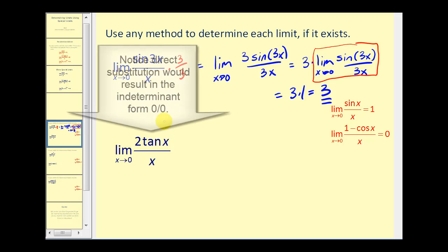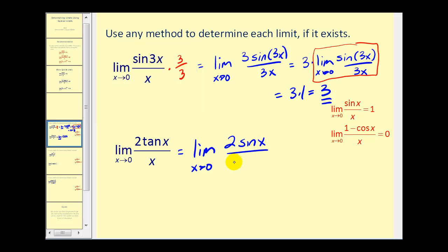Let's take a look at another one. Let's change tan(x) into the quotient of sin(x) divided by cos(x). So this would be the same as the limit as x approaches zero of 2sin(x) divided by x·cos(x).